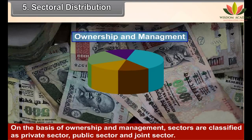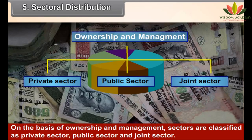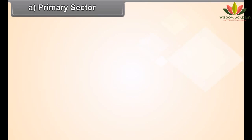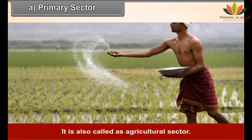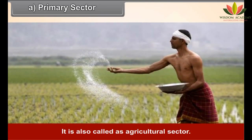On the basis of ownership and management, sectors are classified as private sector, public sector, and joint sector. On the basis of the nature of activities, various productive activities are mainly classified into three sectors.